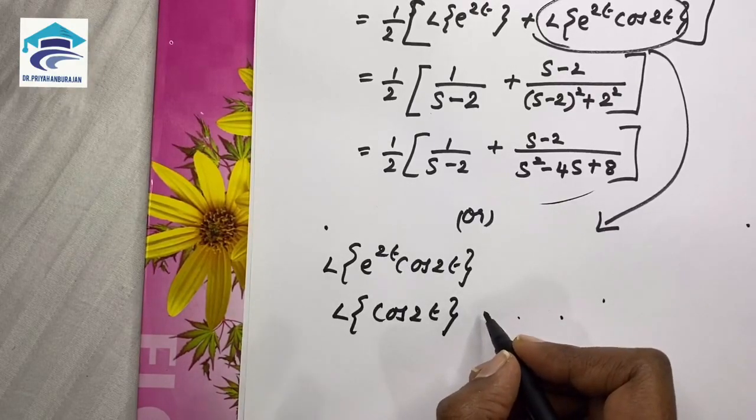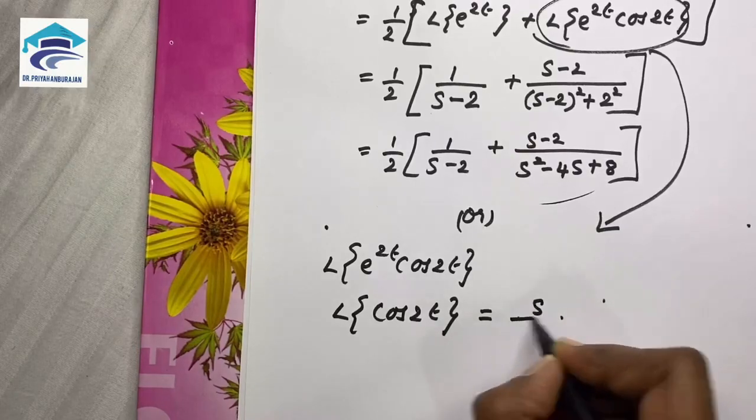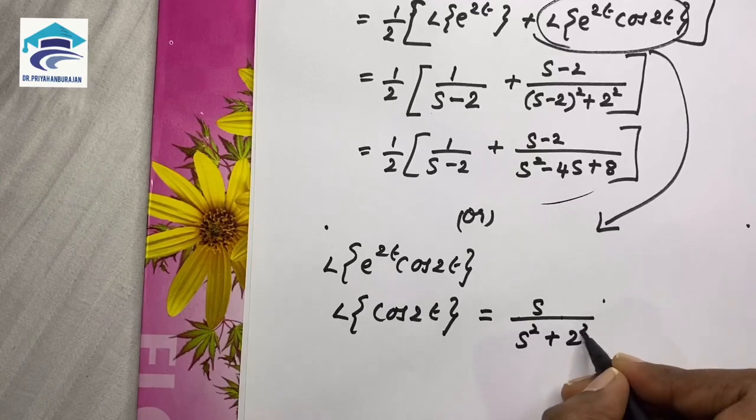What is the cos formula? It is s by s squared plus a squared. So s by s squared plus 2 squared.